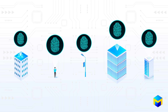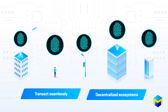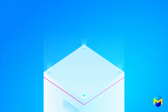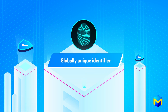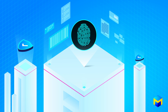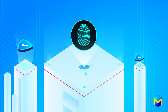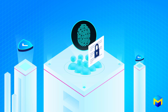DIDs allow entities to transact seamlessly within decentralized ecosystems by serving as traceable, tamper-evident, and unique sources of verifiable data about the entities. Think of a DID as a globally unique identifier. Rather than managing several distinct forms of identification, entities can enjoy secure, hassle-free transactions with any number of ecosystem participants while having control over their own data.